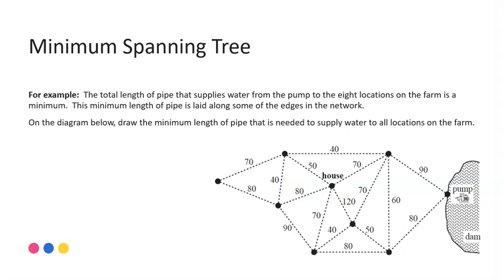A typical exam style question where they're not necessarily saying find the minimum spanning tree. So here's where we've got to read from the context of the question and identify which application we're using. So here we have the total length of pipes that supplies water from the pump to eight locations on the farm is a minimum. This minimum length of pipe is laid along some of the edges in the network. On the diagram below, draw the minimum length of pipe that is needed to supply water to all locations on the farm. So here we need to connect everything to the pump. And so because it's a minimum, we're using our minimum spanning tree.